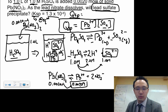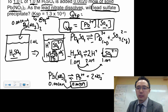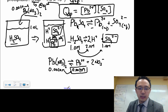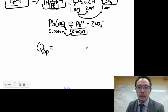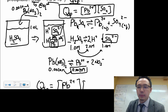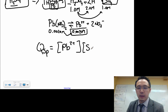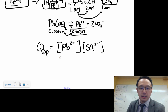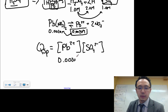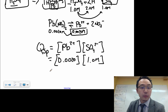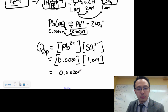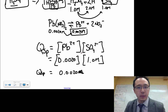This is just to get the concentrations to plug back into the QSP expression. So QSP = [Pb²⁺][SO₄²⁻] = 0.0020 × 1.0 = 0.0020. There are no units because QSP is a constant.